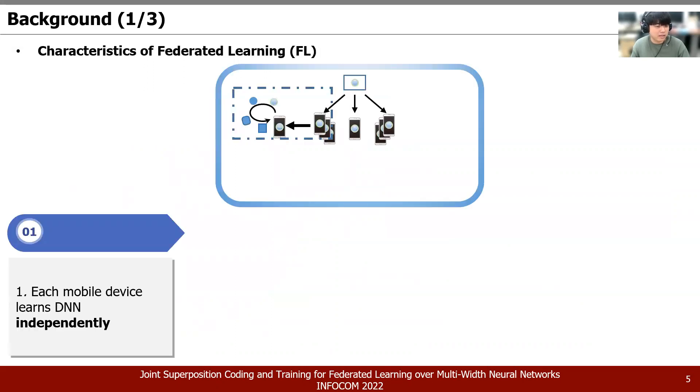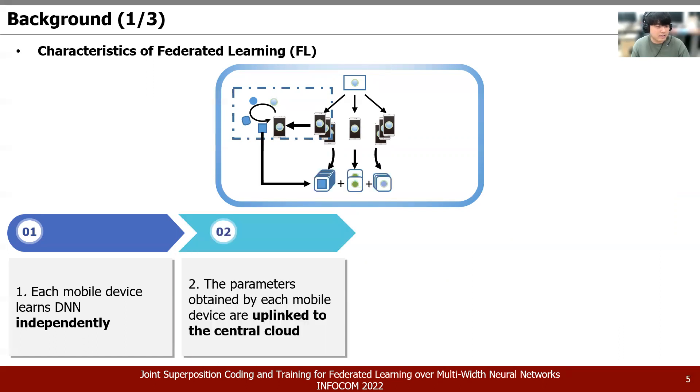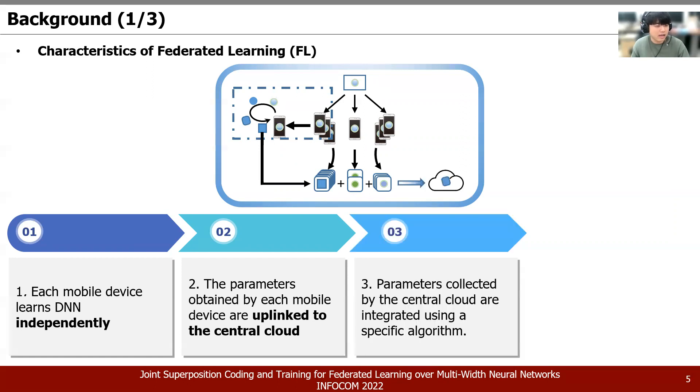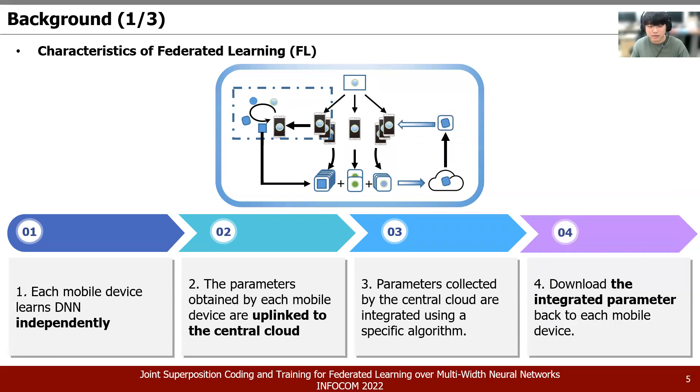The advantage of this method is that it has stronger security than cloud-based learning. This is because the output is transmitted in the form of the parameters. Additionally, Federated Learning also explores the computing resources of multiple devices to the maximum. First, each mobile device learns DNN independently with different data sets. Second, the parameters obtained by each mobile device are uploaded to the central cloud. The parameters collected by the central cloud server are integrated using a specific algorithm. Finally, the integrated parameters are downloaded and sent back to each mobile device. If the performance measurement, typically accuracy, converges while looking at the above sequence, we can conclude that Federated Learning has been successfully completed.